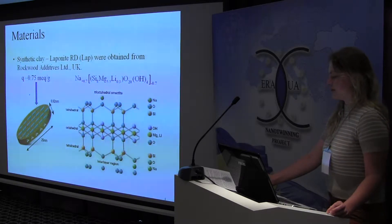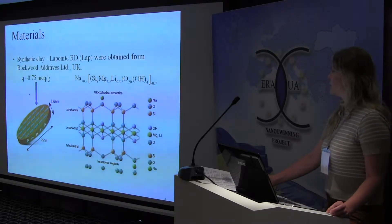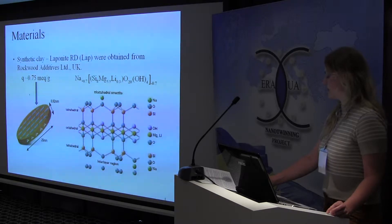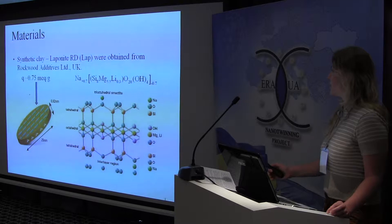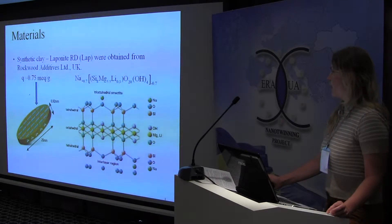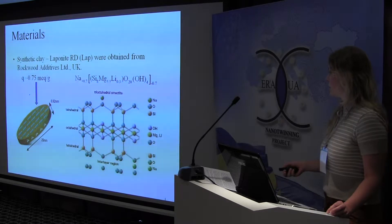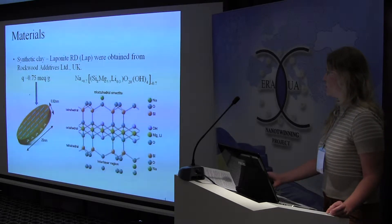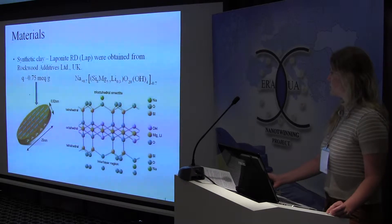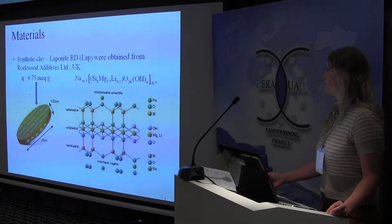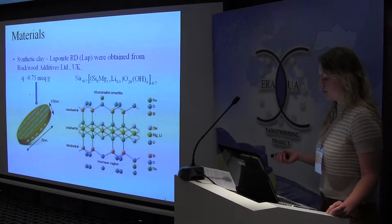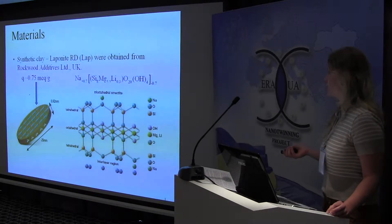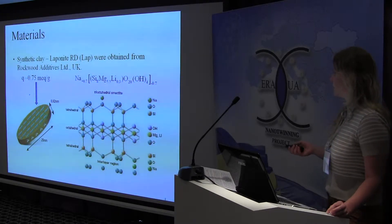The negative surface charge of laponite, defined as the cation exchange capacity, was equal to 0.75 mEq per gram, while the positive charge of the edges makes only a small contribution to the total surface charge.